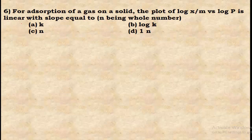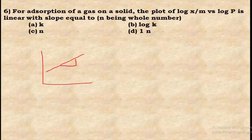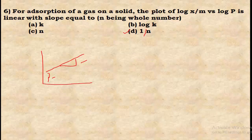Question 6: For adsorption of a gas on a solid, the plot of log(x/m) versus log p is linear with slope equal to — from the Freundlich adsorption isotherm equation log(x/m) = log k + (1/n)·log p, the slope is 1/n and the intercept is log k. So the correct answer is option D: 1/n.